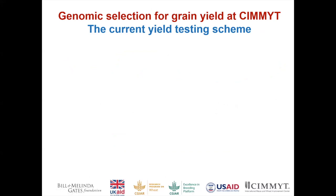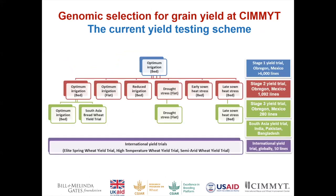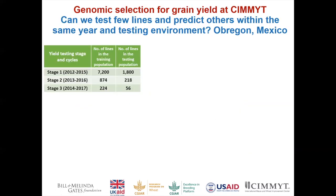Moving on to grain yield genomic selection, which I'm currently focusing on highly. The first stage of yield testing has more than 6,000 lines evaluated in one irrigated environment. The second stage has 1,000 lines in six different environments including drought and heat stress. The third stage has 280 lines evaluated in one drought, one heat stress, and one optimum environment. About 500 third-stage lines go to South Asia for evaluation in India, Pakistan, and Bangladesh, and international yield trial nurseries of about 50 lines are distributed globally to more than 100 countries.